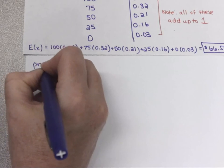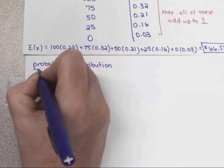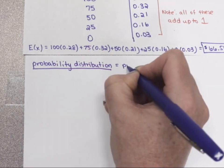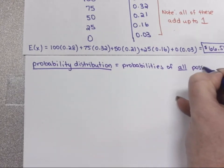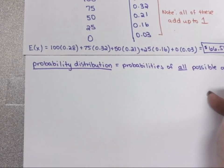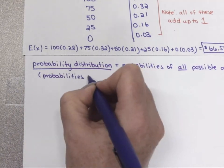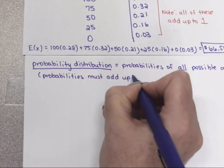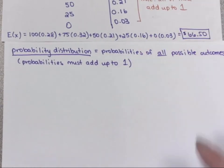A probability distribution is where you list out the probabilities of each of the values — it's a list of the probabilities of all possible outcomes. The probabilities must add up to 1. If you're listing all the outcomes, the probabilities need to show that. So that commission table I just gave you is technically a probability distribution because it listed all the possible commissions plus the probabilities of getting that commission on any given day.